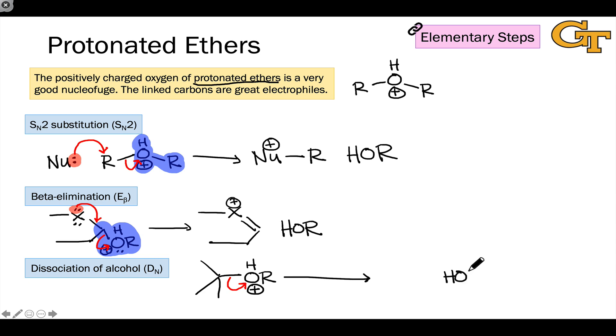The HOR group, a pretty good nucleofuge, just falls off in its own right, and in this example, the tert-butyl cation would be generated as well. So really, in all three of these examples, we see the carbon group linked to the protonated ether acting as a good electrophile, and really the protonation of that ether creates a situation where this carbon that I'm highlighting in green wants to accept electrons.